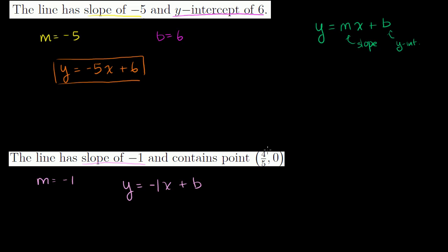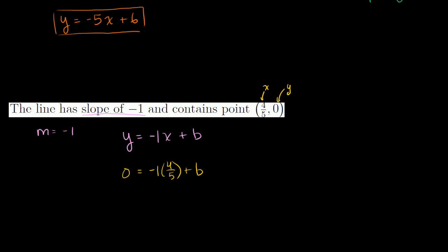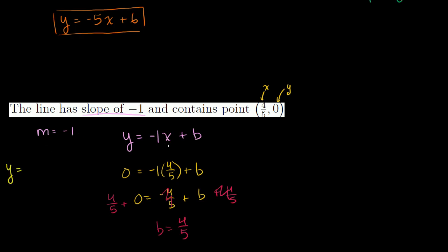The fact that the line contains the point (4/5, 0) means x = 4/5, y = 0 must satisfy this equation. Substituting: 0 = -1 × (4/5) + b, so 0 = -4/5 + b. Adding 4/5 to both sides, b = 4/5. So the equation of the line is y = -x + 4/5.